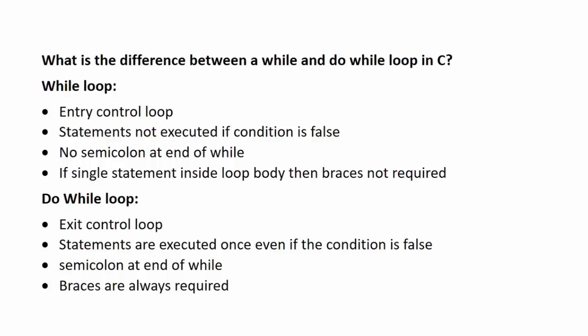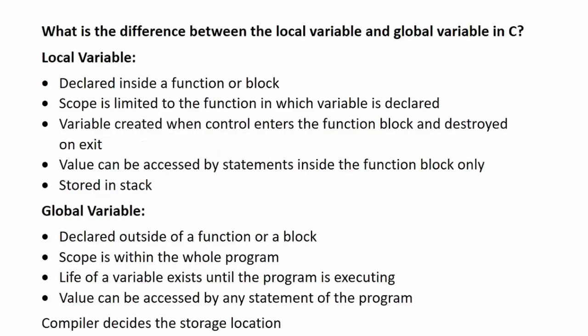Next question: what is the difference between a while and do-while loop in C? While loop is an entry control loop. Statements are not executed if the condition is false — if the control evaluates the condition to be false, it escapes the body of the while loop. No semicolon is present at the end of the while statement. Braces are optional — if there is a single statement in the loop body, braces are not required, but if there are multiple statements, braces are required.